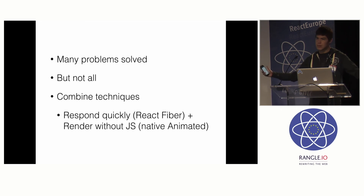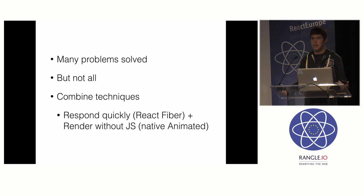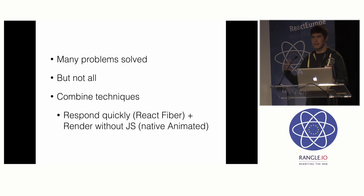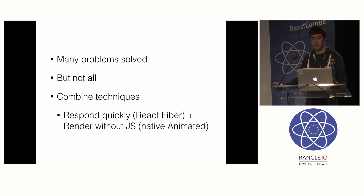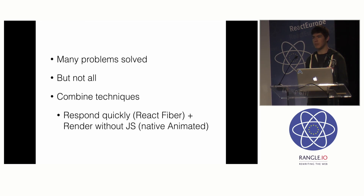That sums up the problems with performance in React Native. We've actually solved a lot of problems with things like requestIdleCallback, and MessageQueue.spy allows you to diagnose problems more quickly. But we haven't fixed all the problems, which is why projects like React Fiber are currently underway. We can also combine these techniques — React Fiber allows us to write very responsive applications that respond quickly to touch events even when complex hierarchies are being rendered. And when we respond quickly to an event and perform an animation, we have a technique called Native Animated, which runs none of the animation in JavaScript except for the initial bit. That's a topic Brent will talk about later today. Thanks.